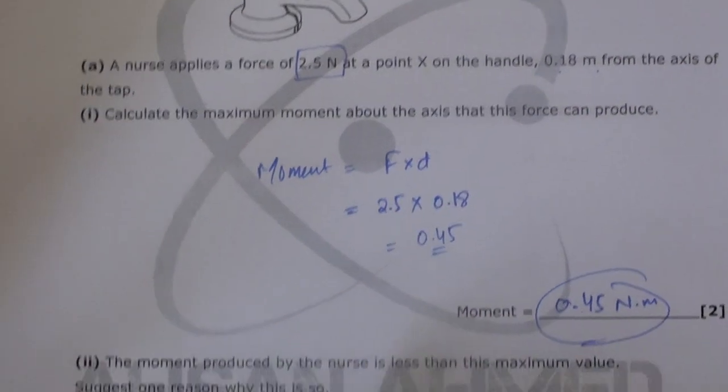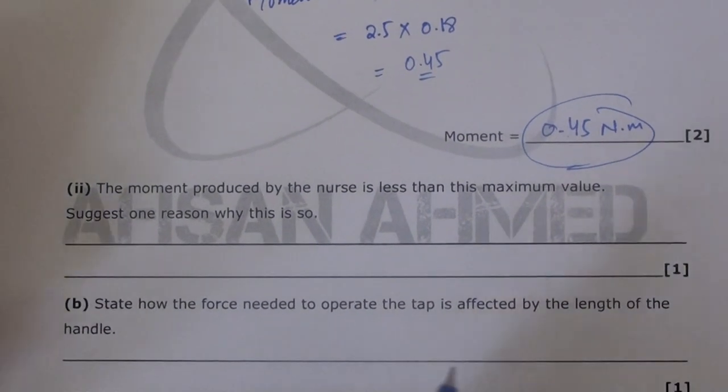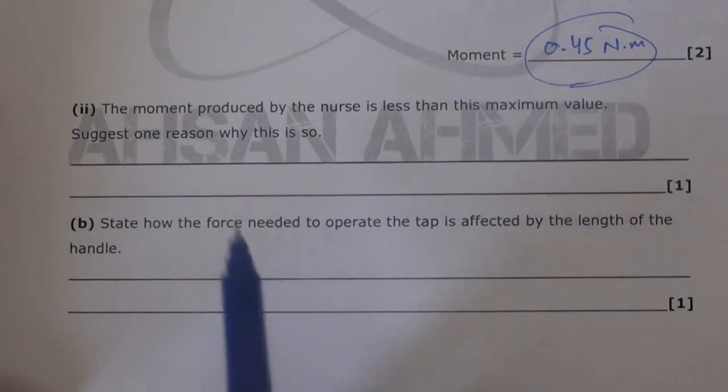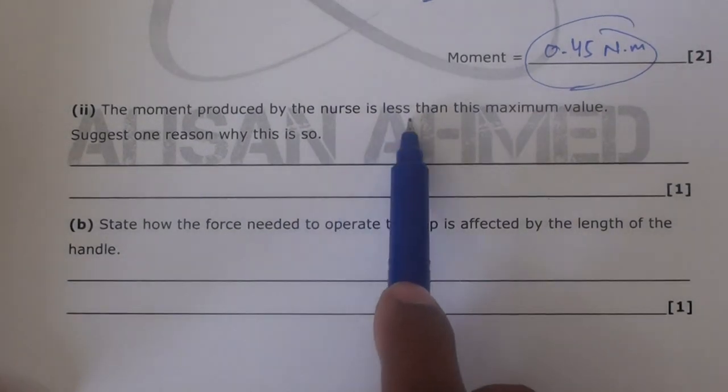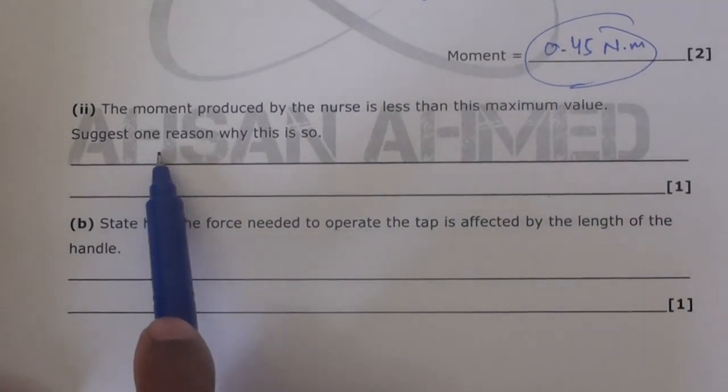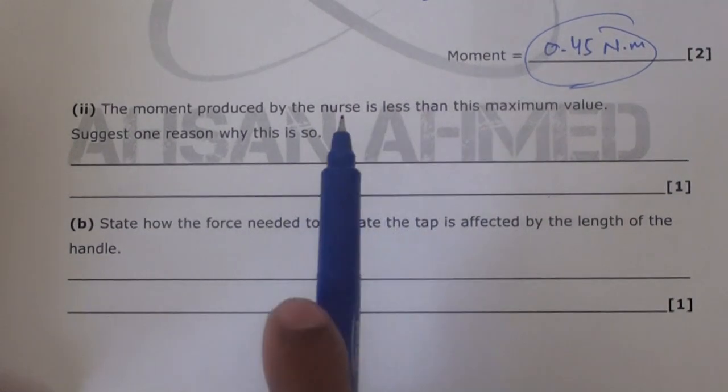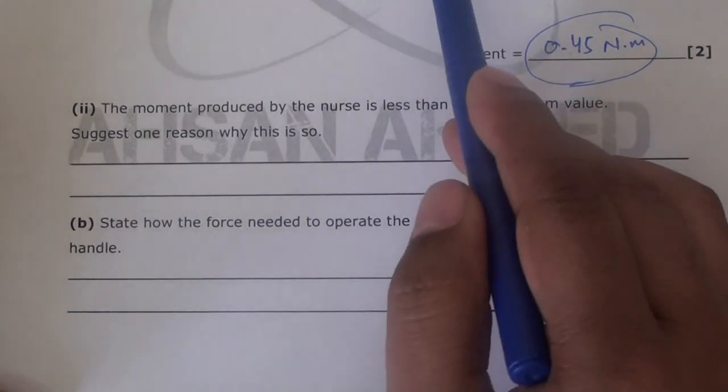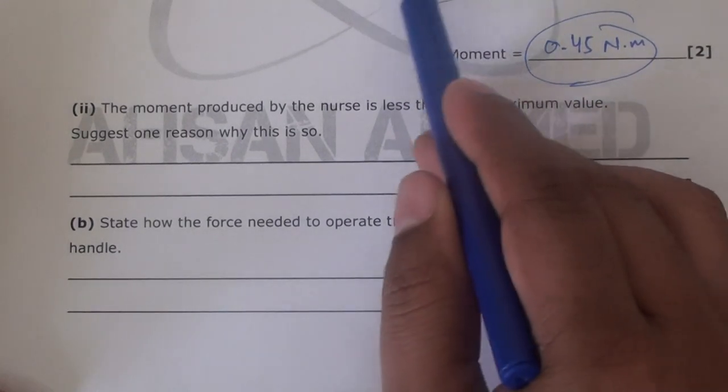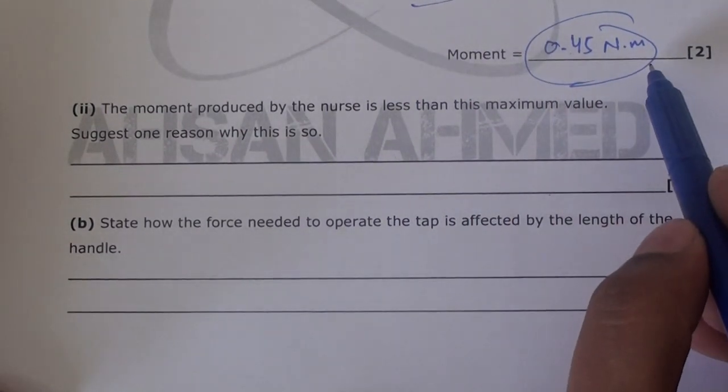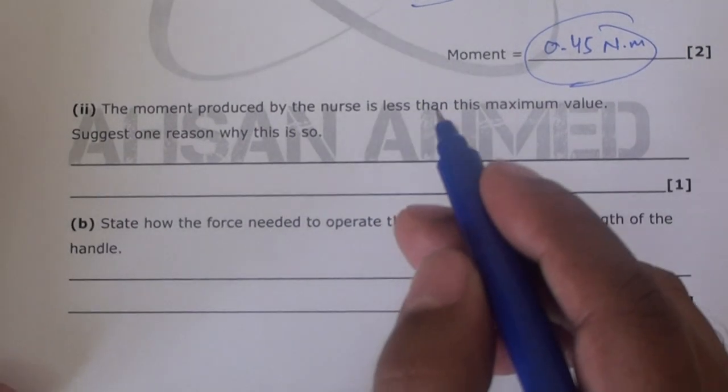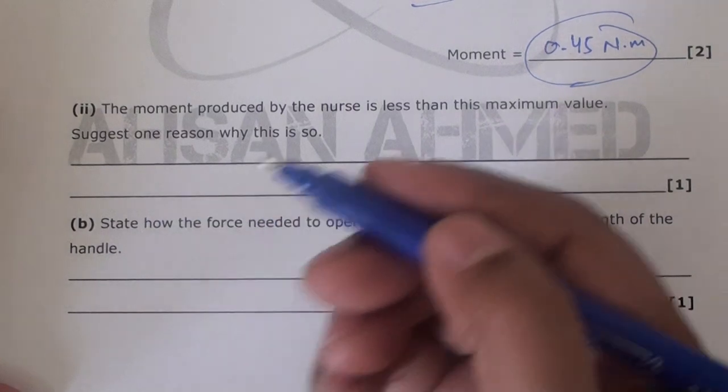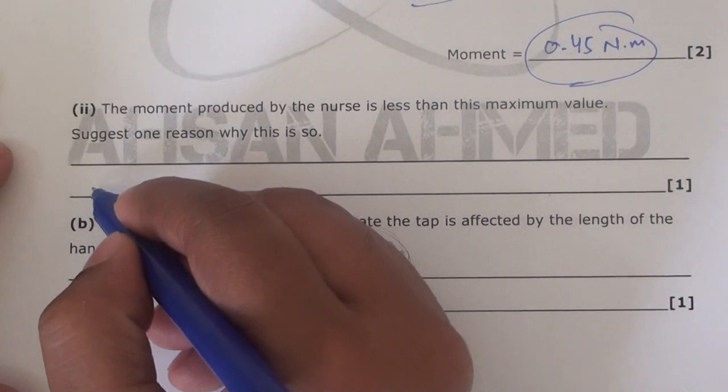Now let's go ahead to the next part. The next part says the moment produced by the nurse is less than this maximum value. Suggest one reason why this is so. The nurse applied 2.5 newtons at 0.18 meters. Technically, 0.45 newton meters moment is produced. But in reality, it's less. One reason we are ignoring is the friction.